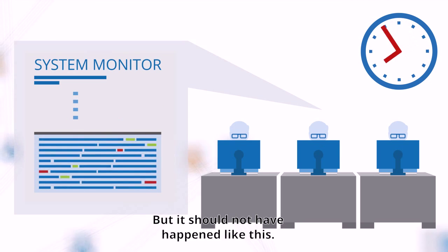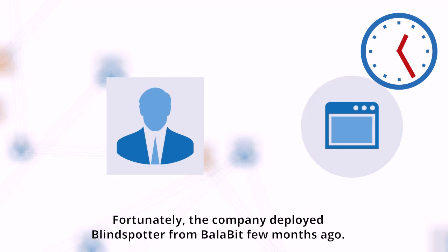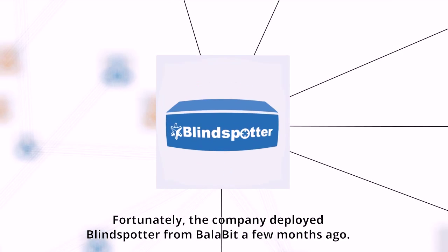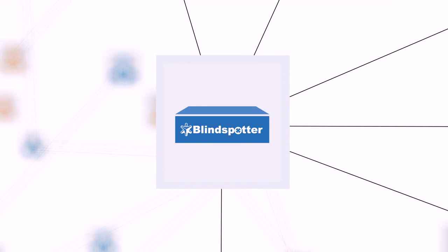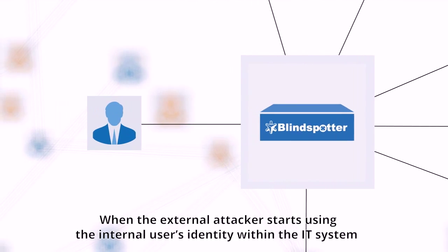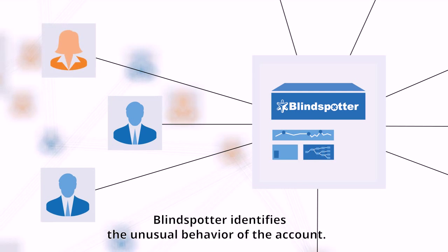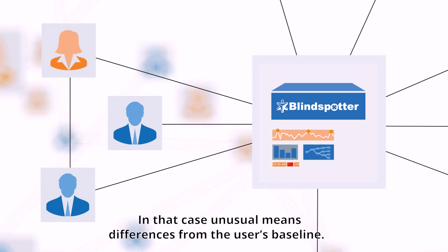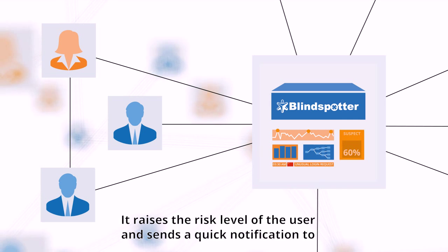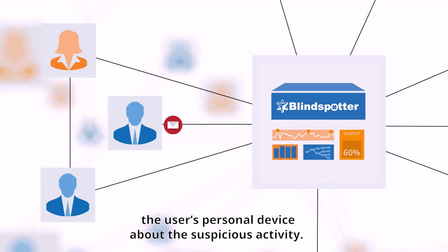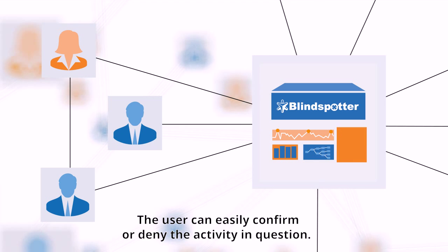But it should not have happened like this. Fortunately, the company deployed Blindspotter from Balabit a few months ago. When the external attacker starts using the internal user's identity within the IT system, Blindspotter identifies the unusual behavior of the account — unusual meaning differences from the user's baseline. It raises the risk level of the user and sends a quick notification to the user's personal device about the suspicious activity. The user can easily confirm or deny the activity in question.